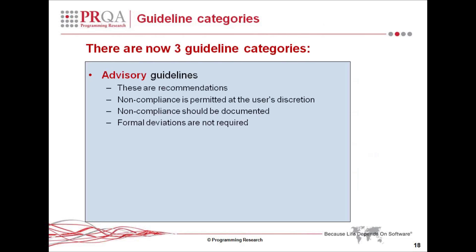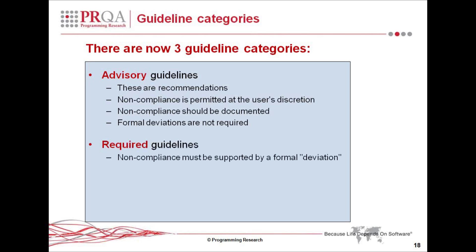Guideline categories existed in previous versions of MISRA. Advisory guidelines are essentially recommendations, and non-compliance is acknowledged as being legitimate at the discretion of the user. All that MISRA C says is that non-compliance should be documented, but it doesn't have to be documented in the form of a formal deviation. As opposed to required guidelines, where non-compliance with a required guideline needs to be supported by a formal deviation. We'll talk about deviations more a bit later on.